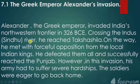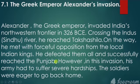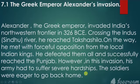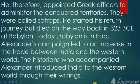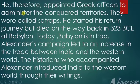Crossing the Indus (Sindhu) river, Alexander reached Takshashila. On the way he met with forceful opposition from local Indian kings but defeated them all and successfully reached Punjab. However, during this invasion his army suffered severe hardship and the soldiers were eager to go back home. He therefore appointed Greek officers called satraps to administer the conquered territories.